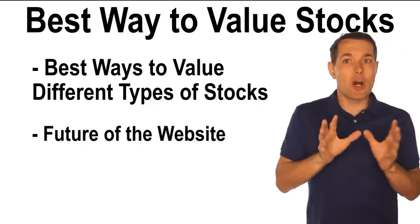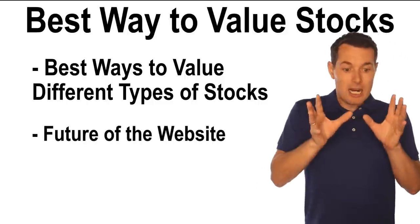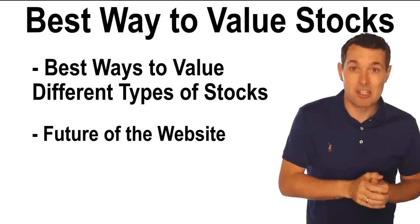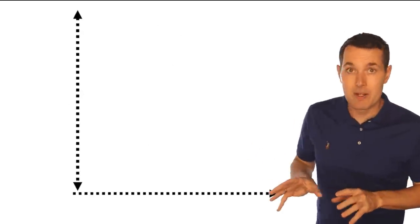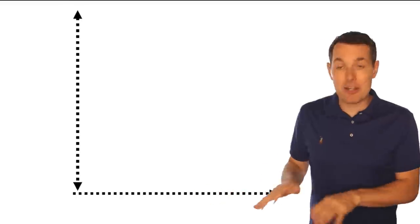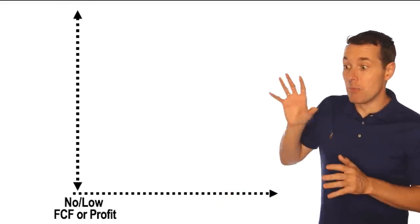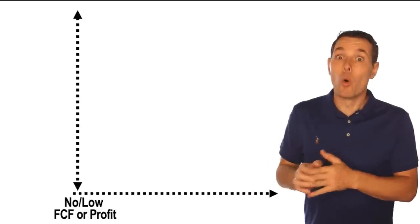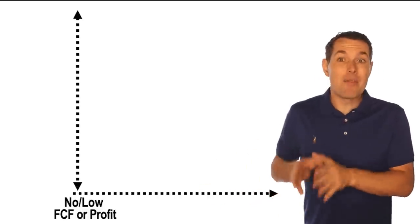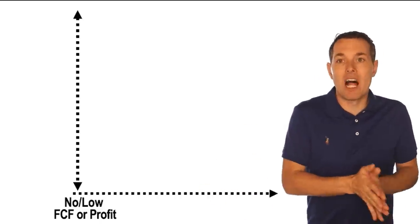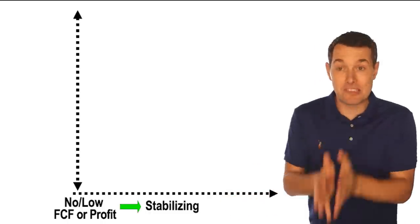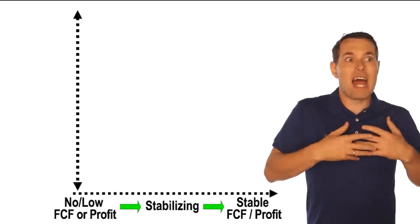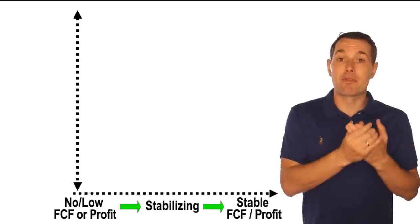To illustrate that, let me show some of the best ways to value different types of stocks. We've created a chart. On the X axis at the bottom, we're starting from a company that has no profit or negative profit — a company that's losing money or negative free cashflow. As we move along the line, the company will gradually be stabilizing, and then from there will gradually develop where they have stable profit and stable free cashflow.